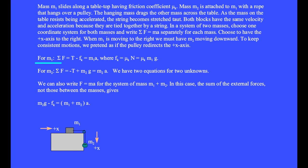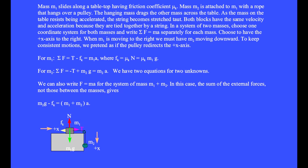For mass m1, the sum of the forces is a positive tension T minus the leftward kinetic frictional force fk equals m1a. The kinetic frictional force is always mu k N, and for this table on a flat surface, the normal force is m1g. So the kinetic frictional force equals mu k m1g.